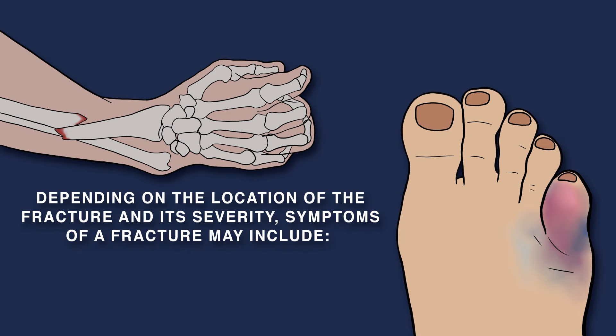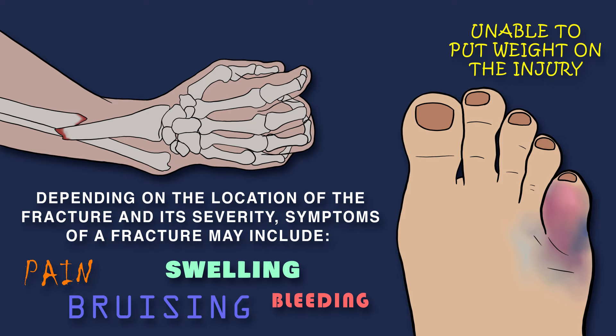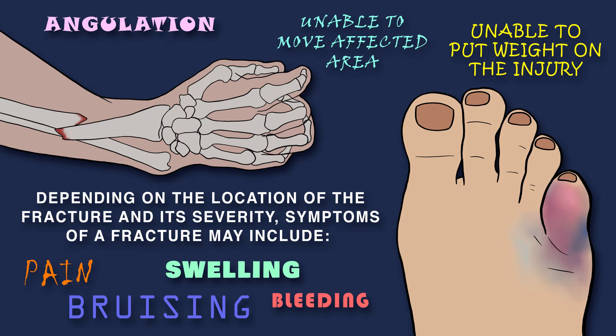Depending on the location of the fracture and its severity, symptoms of a fracture may include pain, bruising, swelling, and bleeding. In addition, the individual may be unable to put weight on the injury or move the affected area. There may also be angulation, in which the affected area is bent at an abnormal angle.